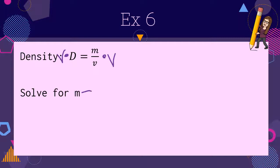So m is equal to density times volume, m = Dv.